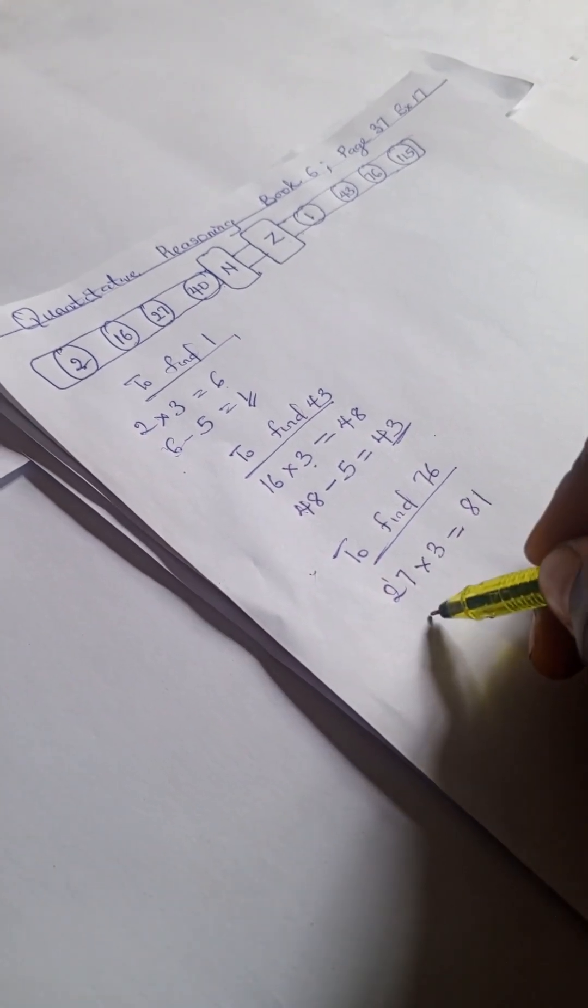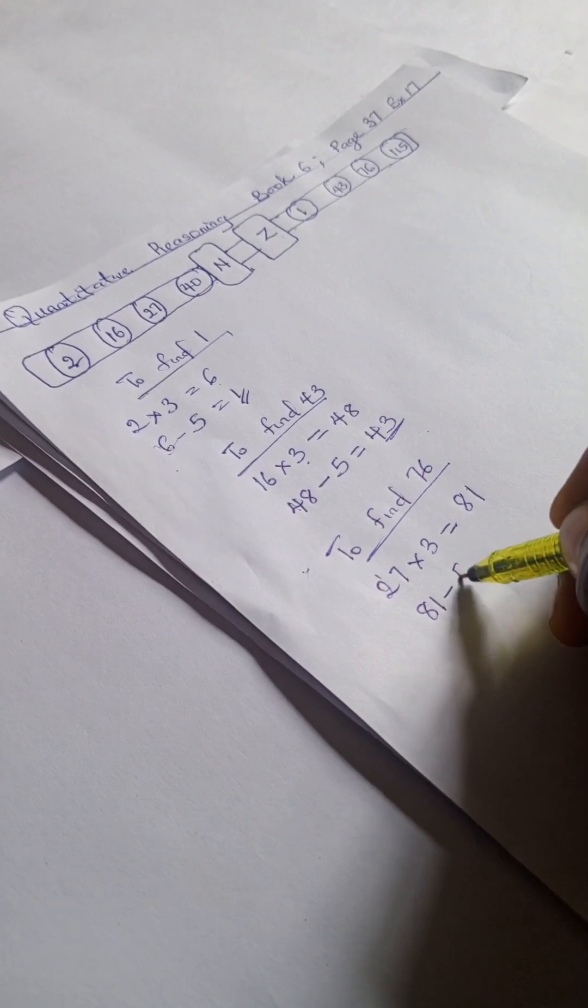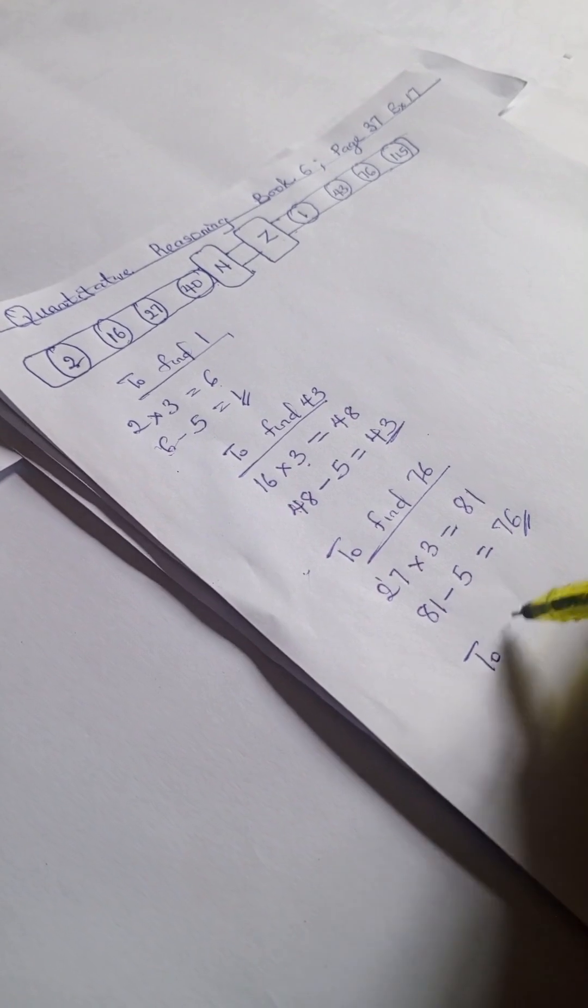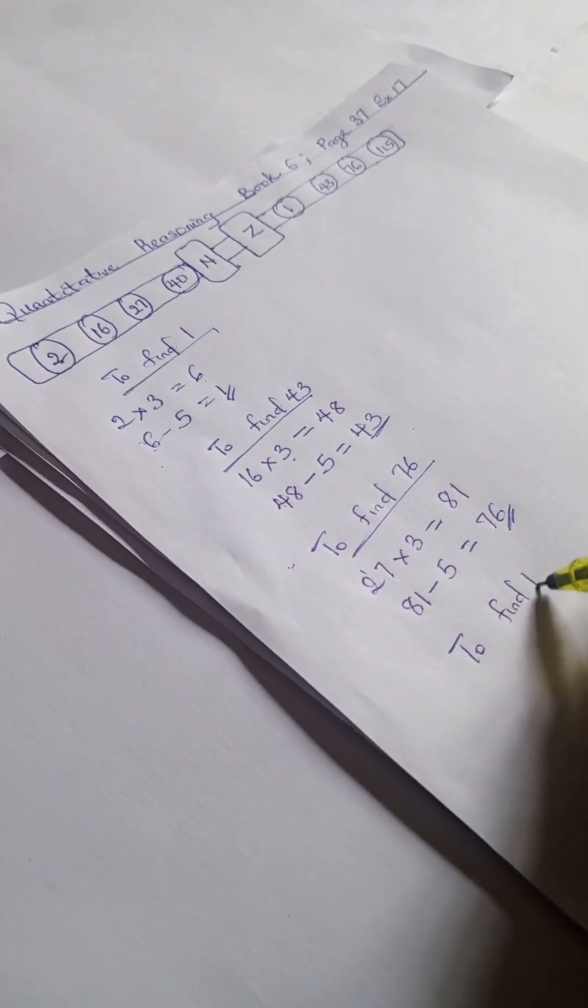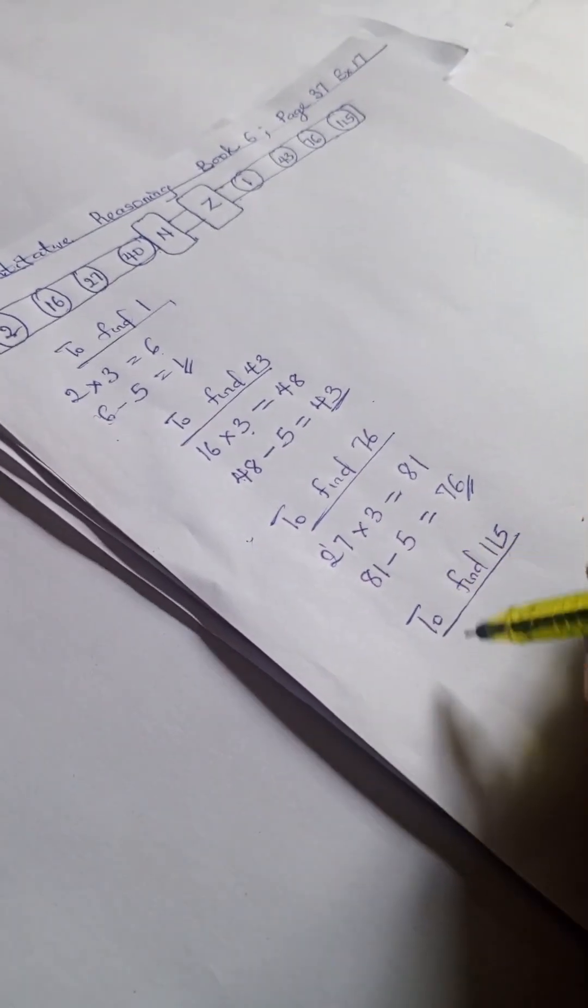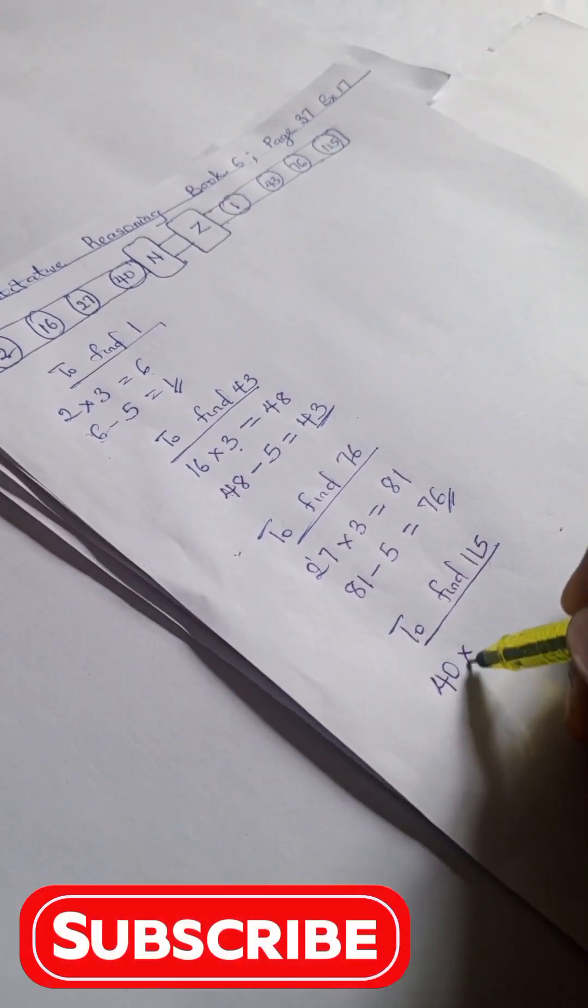And to find 115, we're going to have 40 times 3, that gives us 120, and 120 minus 5, we have 115.